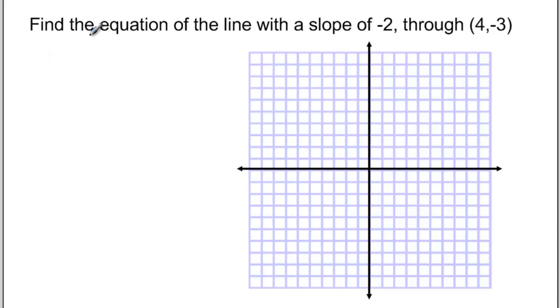So let's try this question. Find the equation of a line with a slope of negative 2 through the point 4 and negative 3. So here again, y equals mx plus b is our equation. We have a slope of negative 2. So y equals negative 2x plus b.